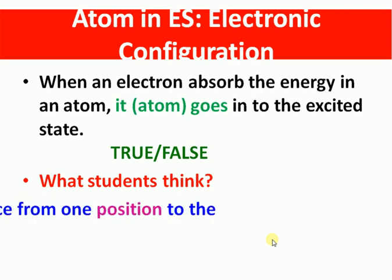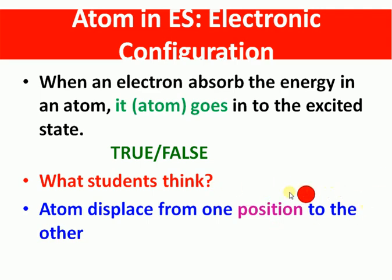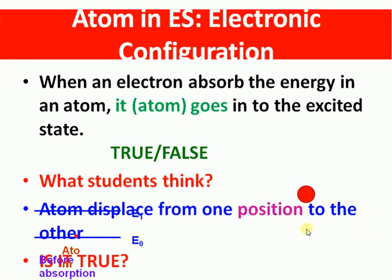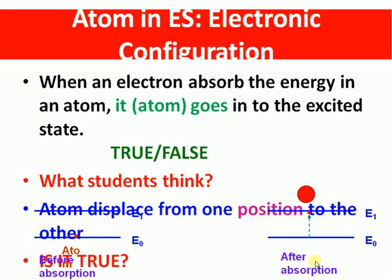However, students understand this as a displacement of the atom from one position to another. Looking at the diagram with two lines representing the ground state and excited state, students see the atom moving from the first line to the second line and think of it as physical displacement from one position to another — a visual misunderstanding.